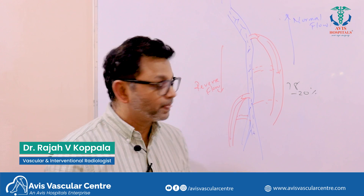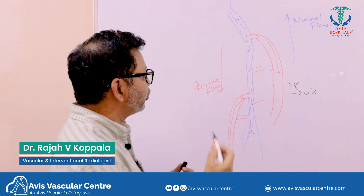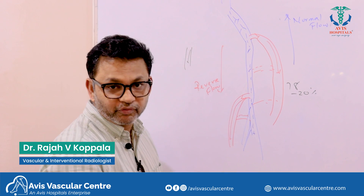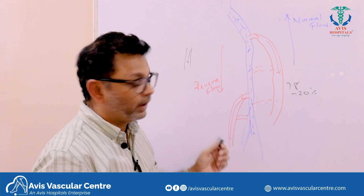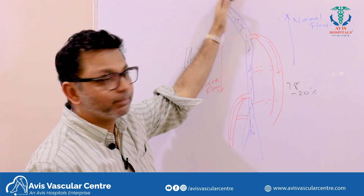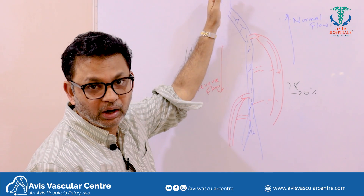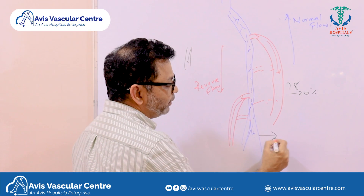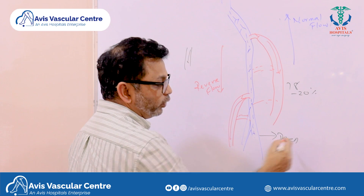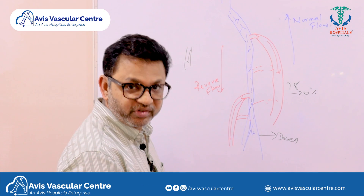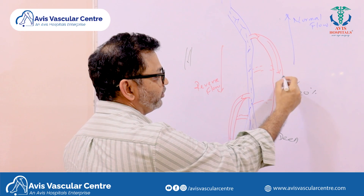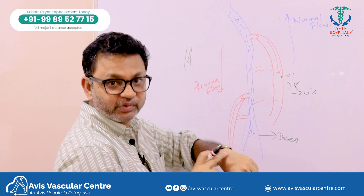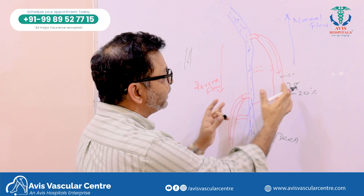We have arteries that bring blood from the heart to the leg, and veins that take the blood back to the heart. Within the veins, we have deep veins which are deep inside and not visible, and superficial veins which are right under the skin.